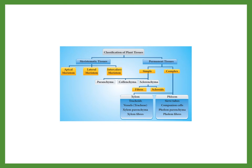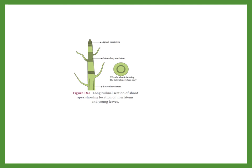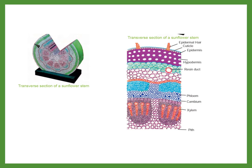This is longitudinal section of a shoot apex showing location of meristem and young leaves. Apical meristem, intercalary meristem and lateral meristem. Apical meristem will increase the length of the plant, height of the plant. Same way, lateral meristem will increase the thickness of the stem. That is very important. The diagram question usually they will ask. The given diagram shows apical meristem, intercalary meristem and lateral meristem.